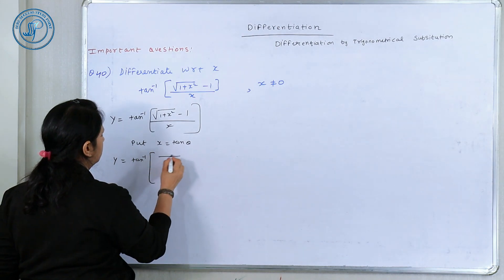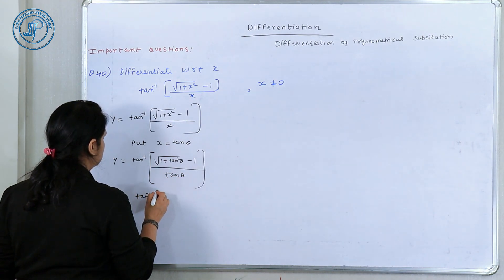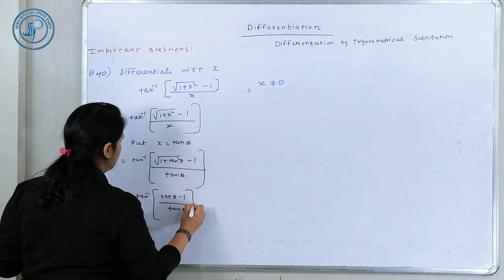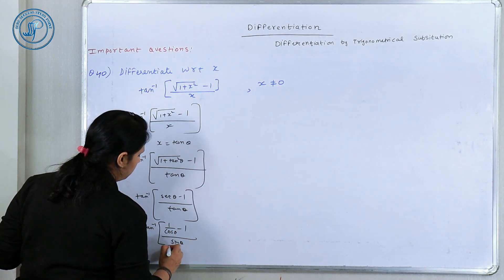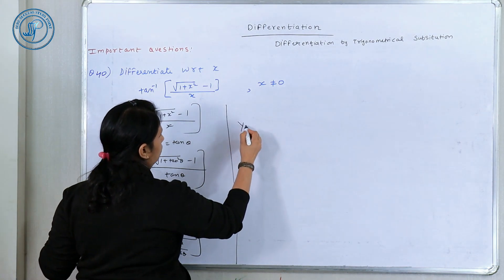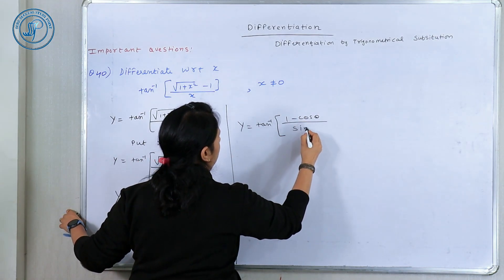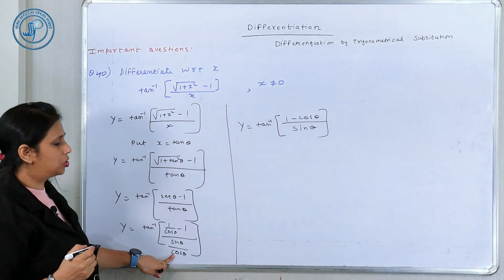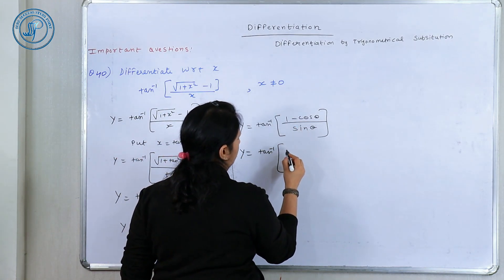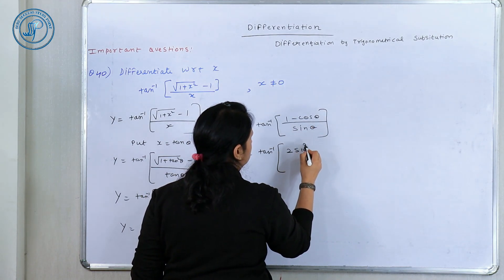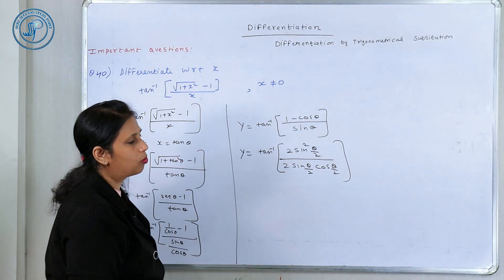y = tan inverse of (√(1 + tan²θ) − 1)/tan θ, which gives y = tan inverse of (sec θ − 1)/tan θ. Writing sec θ as 1/cos θ and tan θ as sin θ/cos θ, we get y = tan inverse of (1 − cos θ)/sin θ. Now applying the magic 6 formulas: 1 − cos θ = 2 sin²(θ/2) and sin θ = 2 sin(θ/2) cos(θ/2).